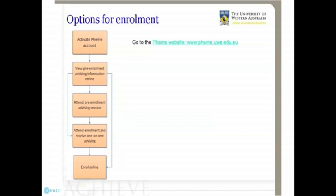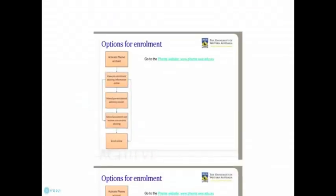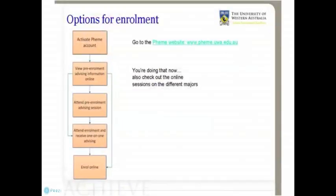The first thing is to activate your Femi account. What's a Femi account? Well, Femi is the university's access management system. You log in there to access a range of university services. After you've activated your Femi account, you should then have a look at the pre-enrolment information online.